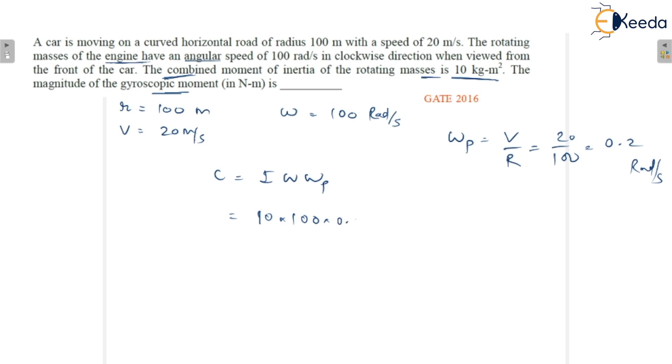You just put the values here and you will get 200 newton meters. That would be the gyroscope couple.